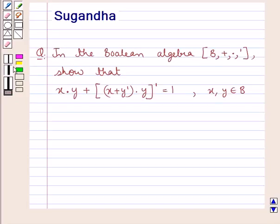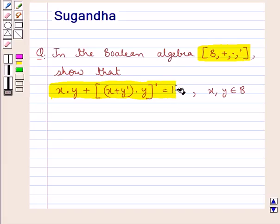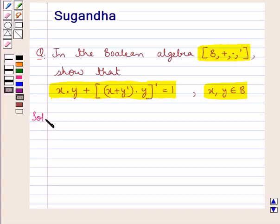Hello and welcome to the session. In this session we discuss the following question: in the Boolean algebra consisting of the set B and the operations sum, product, and complement, show that x·y + (x + y')·y)' is equal to 1, where x and y are elements of the set B. Let's proceed with the solution now.